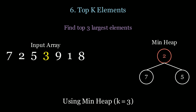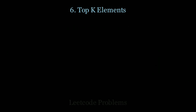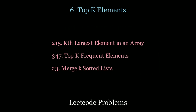This keeps track of the top K most elements in the list. Why is this better than sorting? Because popping from a heap is O(log k), so the total time complexity is O(n log k), which is better than O(n log n). To get more practice, look at the following LeetCode questions.